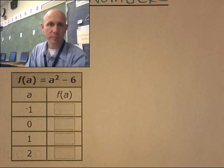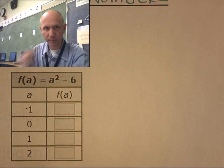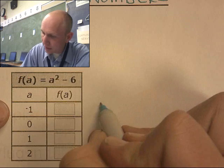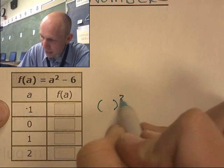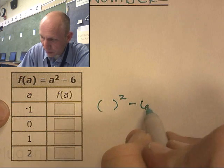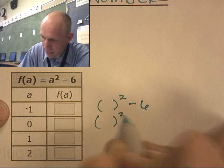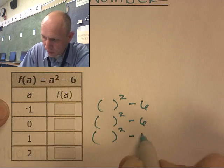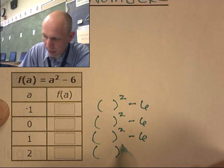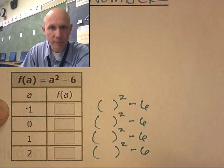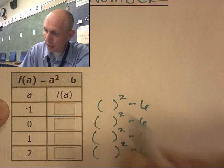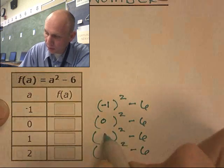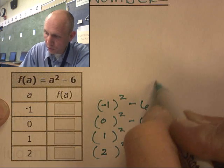We're going to fill in this table. The function is a² - 6. We write it out for each input — replacing the variable with parentheses — and plug in the values: negative 1, 0, 1, and 2.